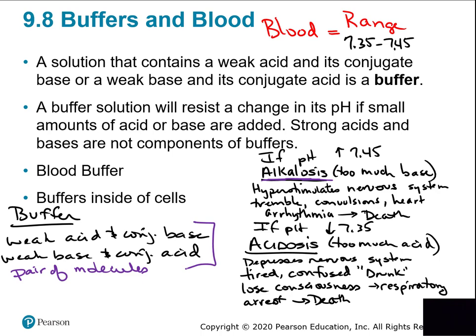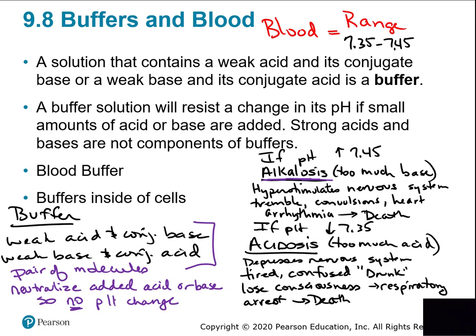A buffer solution is a pair of molecules — either a weak acid and its conjugate base, or a weak base and its conjugate acid. In the blood it's a weak acid and its conjugate base. The goal of the buffer is to stop the pH from changing by neutralizing acid or base that gets added to the liquid, resulting in no pH change.